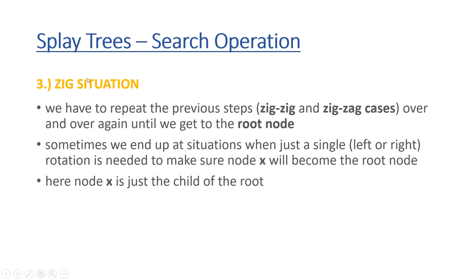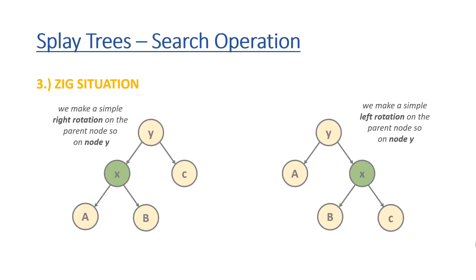What about the last situation — the so-called zig situation? We repeat the previous steps for zigzag and zig-zig cases over and over again until we reach the root node. But sometimes we end up in a situation where just a single left or right rotation is needed to make node x the root node of the original tree. Here, node x is just the child of the root node — whether it is the left or right child — so we make a single left or single right rotation on the parent, which is the root node of the tree.